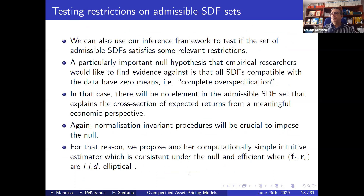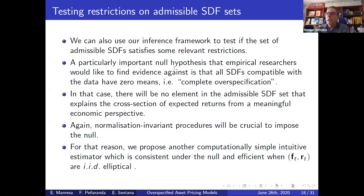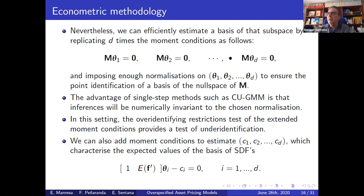We can also use this generalized framework to test restrictions on the set of admissible stochastic discount factors. One important null hypothesis is to test for complete over-specification. We add conditions stating there is complete over-specification — effectively that the stochastic discount factor has zero means, since lack of correlation for the stochastic discount factor is the same thing as the stochastic discount factor having zero mean. The model remains linear in parameters, but since we're using continuously updated GMM, we also need consistent initial values.